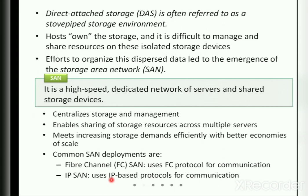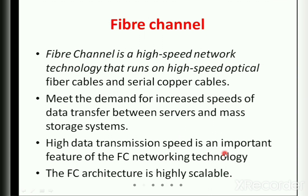Fiber Channel has the highest speed and has replaced various cables. We used to use copper cables, twisted pair cables, coaxial cables, and then fiber channels came. Fiber Channel is used to connect to storage area networks and exchange data. The second type is IP SAN, which uses internet-based protocols to exchange data from storage devices to the host. Fiber Channel is a high-speed network technology that runs on high-speed optical fiber cables and serial copper cables.